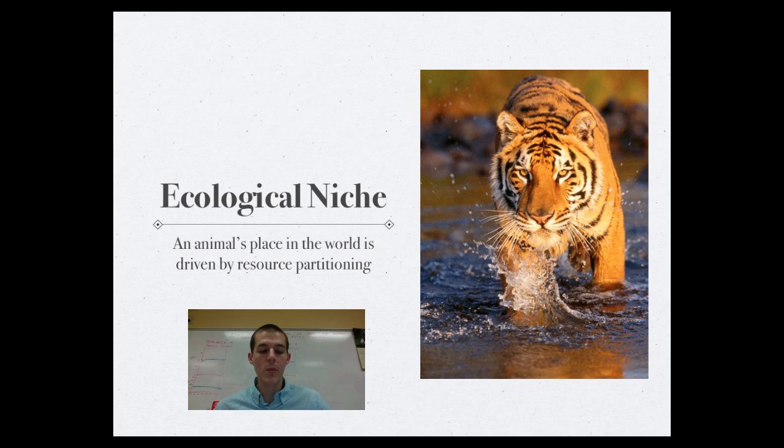So kind of a classic example of resource partitioning is a pine tree that is inhabited by several different types of birds. And what we see in this pine tree is that species A of birds might live up here in the top outer region of the tree. Species B might inhabit the interior.